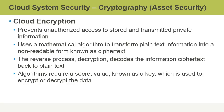Encryption uses a mathematical algorithm to transform plain text into a non-readable form known as ciphertext. The reverse process of decrypting that ciphertext decodes the information back to plain text. All these algorithms will require some kind of a secret value known as a key, which is used to encrypt or decrypt the data.